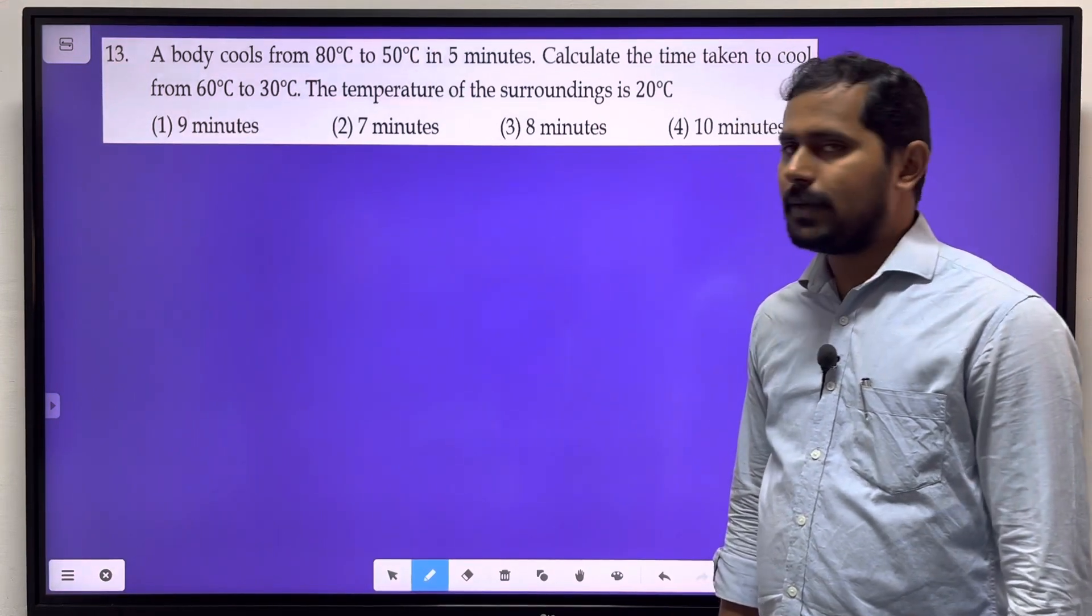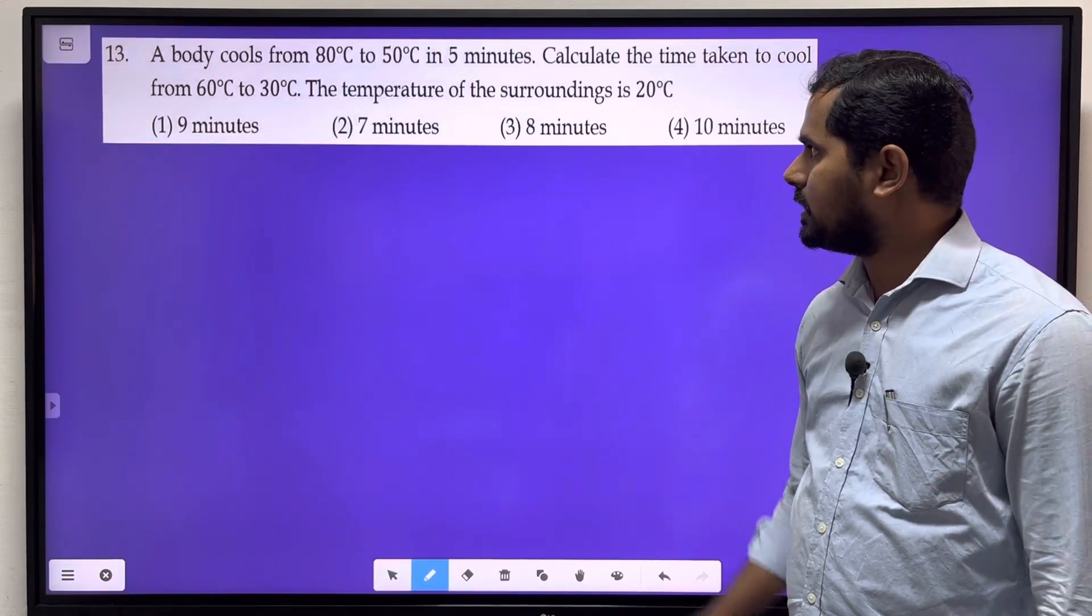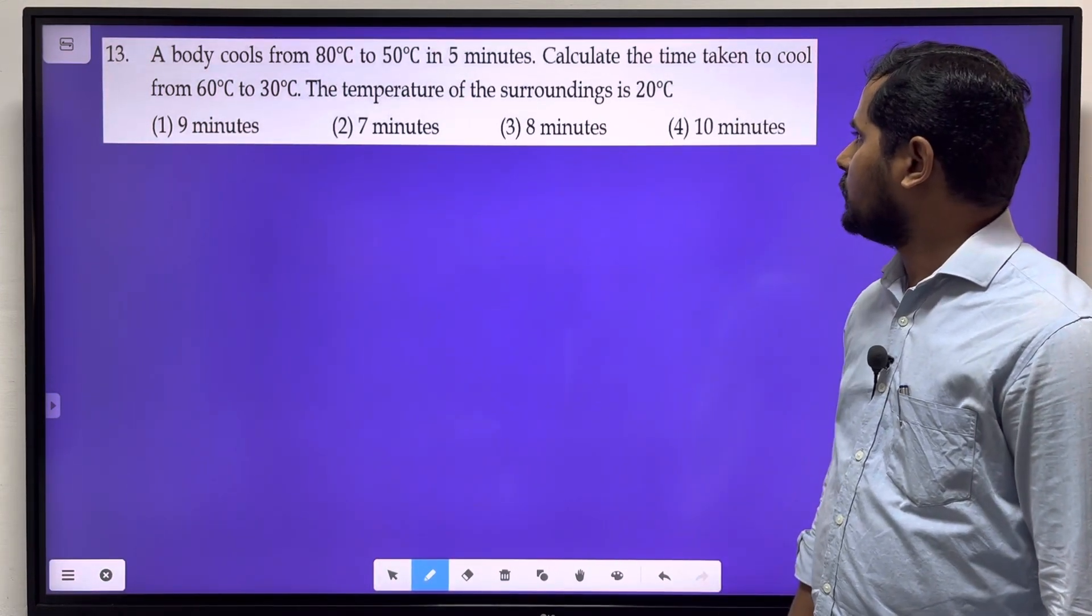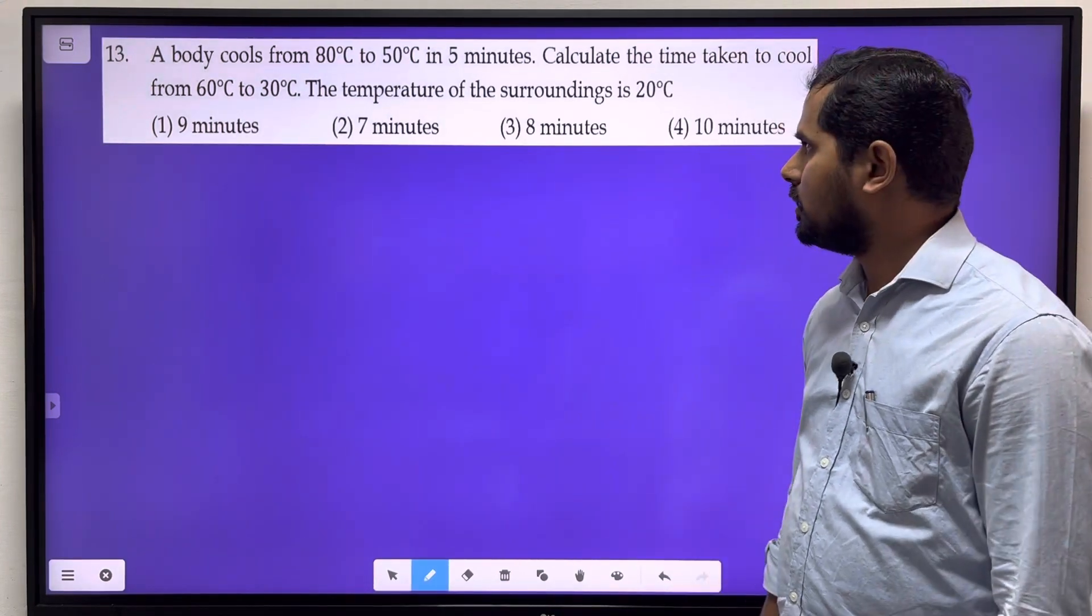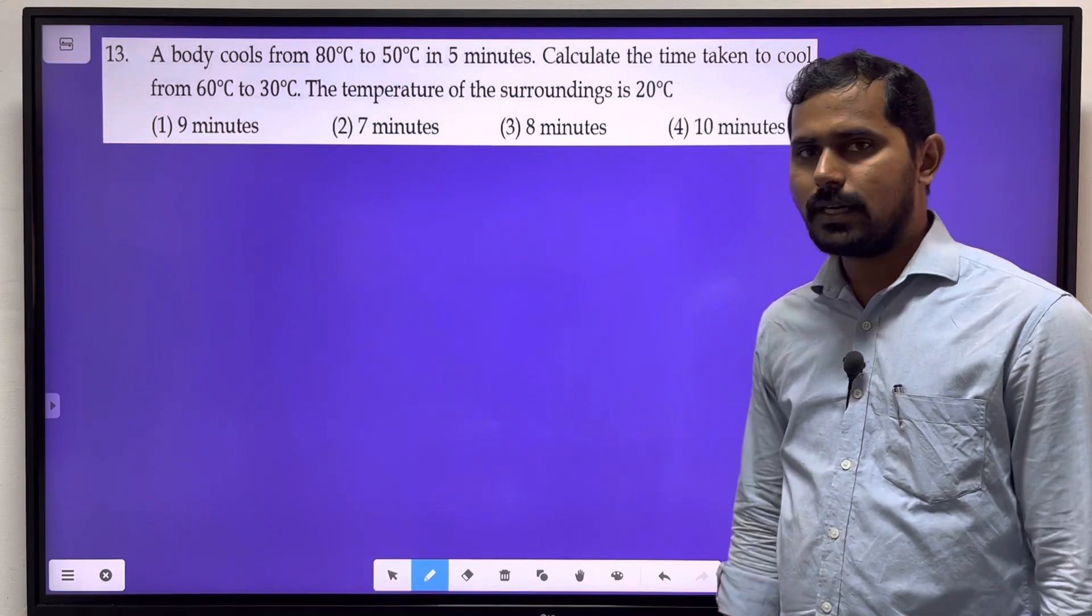A body cools from 80 degrees Celsius to 50 degrees Celsius in 5 minutes. Calculate the time taken to cool from 60 degrees Celsius to 30 degrees Celsius. The temperature of the surrounding is 20 degrees Celsius.